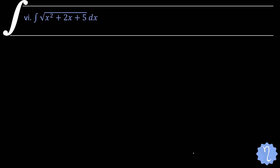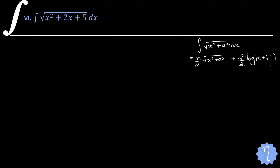In the sixth and seventh questions we have different kinds of integrals. There was a formula we covered before this exercise on the UV rule. For ∫√(x²+a²) dx, the formula is: x/2 · √(x²+a²) + a²/2 · log|x + √(x²+a²)| + c. For the minus version √(x²−a²), it is the same but with a minus sign inside the root and before the log term. We first apply completing the square to bring it into this form.